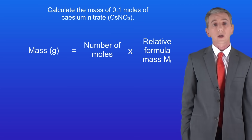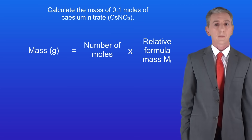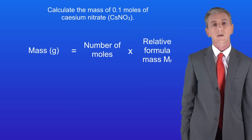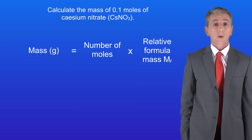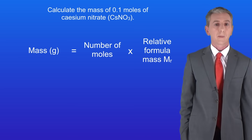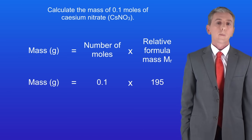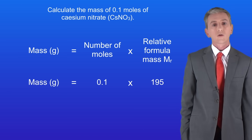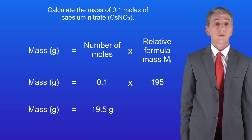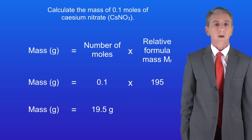Going back to our equation we can now calculate the mass of 0.1 moles of caesium nitrate. The mass is the number of moles multiplied by the relative formula mass. Multiplying 0.1 by 195 gives us a mass of 19.5 grams.